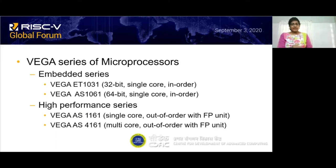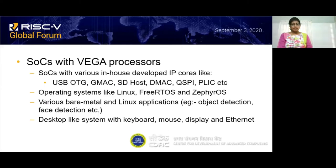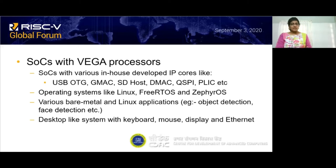These processors are built with multi-level caches, memory management unit, and coherent interconnect. CDAC has also integrated a wide range of peripheral IPs like USB OTG, GMAC, and DMAC. It has supported SOCs on FPGA boards, booted operating systems like Linux, FreeRTOS, and various bare-metal and Linux applications have been implemented, including object detection and face detection. Performance has been verified with standard benchmarks. These systems are compatible as desktop systems with keyboard, mouse, and Ethernet.